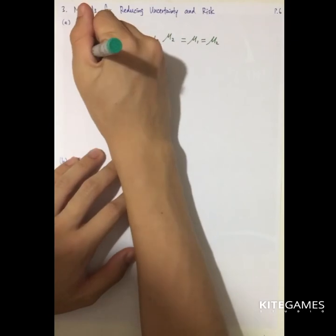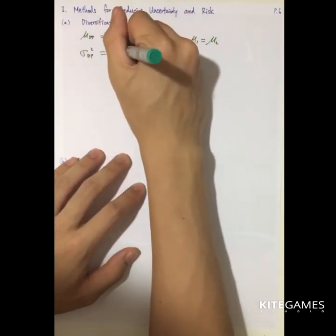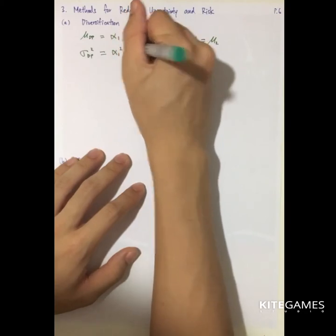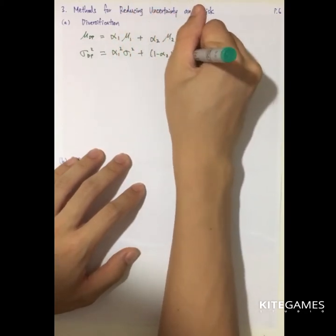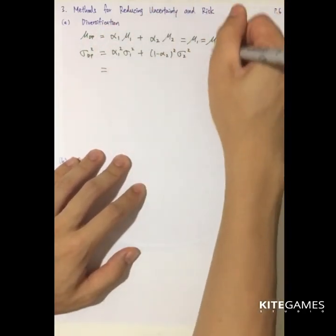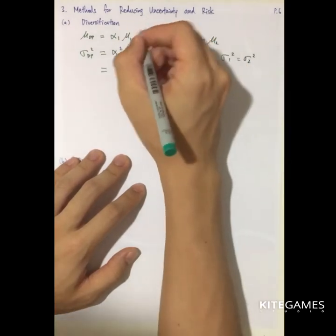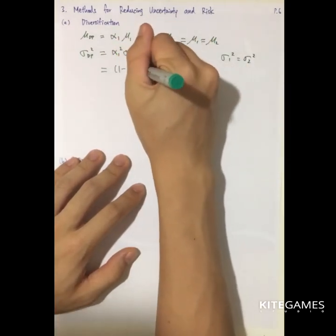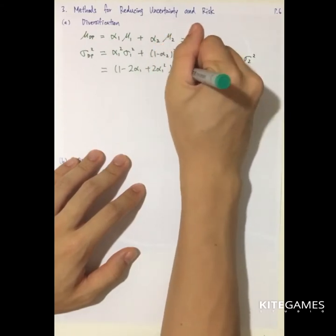So if we take a look at the variance, we will get alpha 1 squared plus this term. So if we assume again the variance of 1 equal to the variance of 2, we will get 1 minus 2 alpha 1 plus 2 alpha 1 squared times sigma 1 squared.